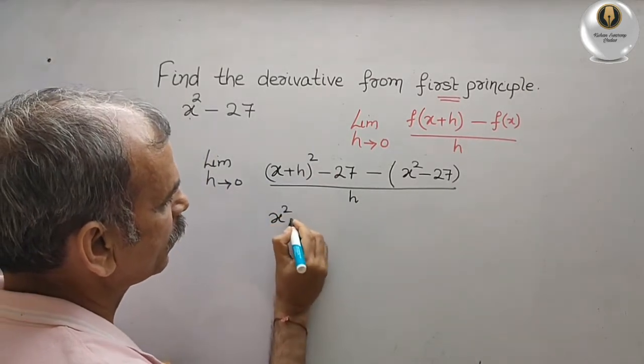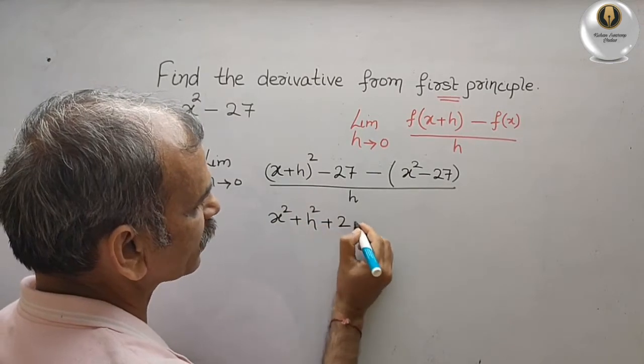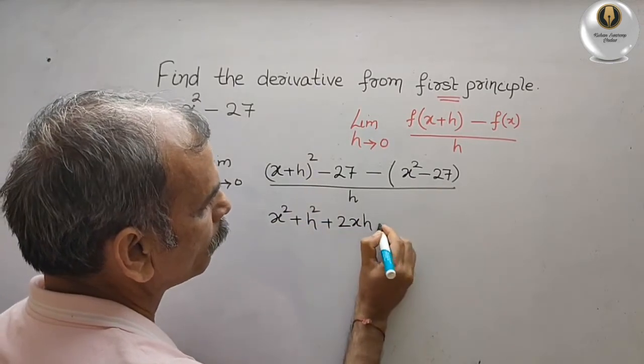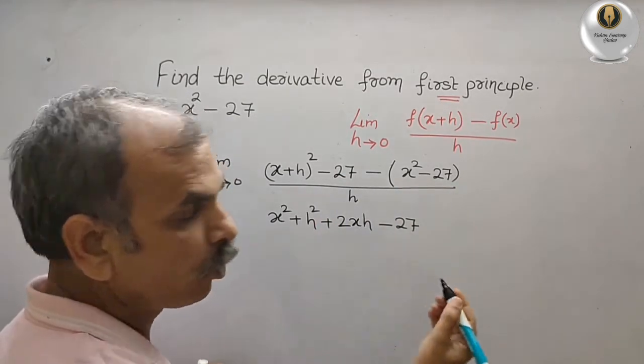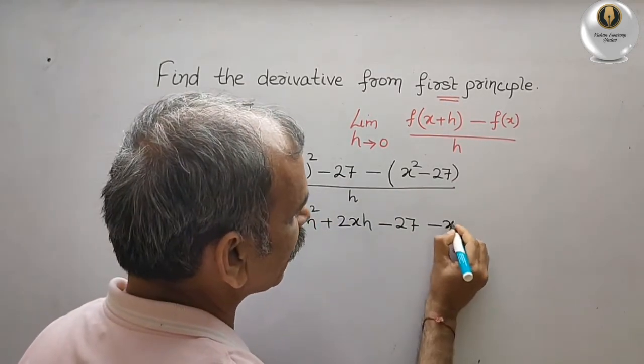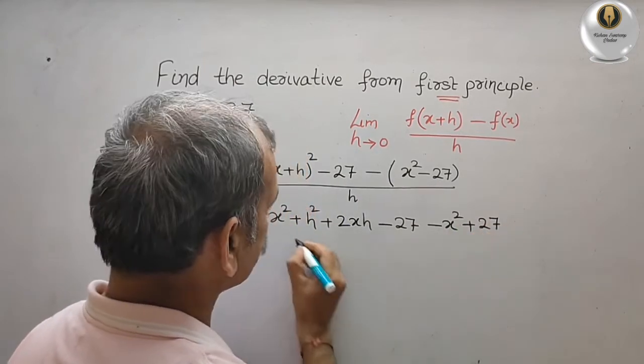Now open this bracket. What we get: minus x squared plus 27, divided by h.